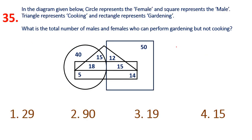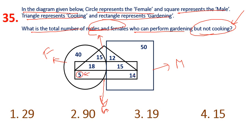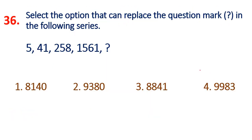Question 35: In the diagram, circle represents female, square represents male, triangle represents cooking, rectangle represents gardening. Find the total number of males and females who can perform gardening but not cooking. Only gardening - females: 5 members, males: 14 members. 5 plus 14 equals 19. Option 3 is the answer.